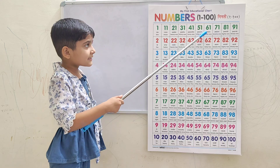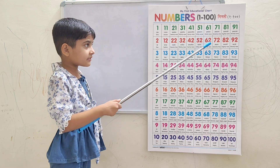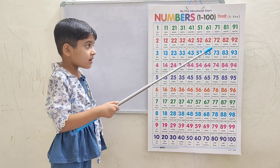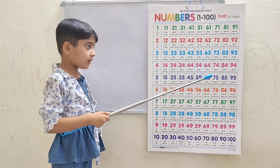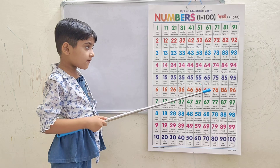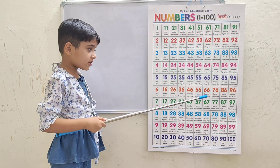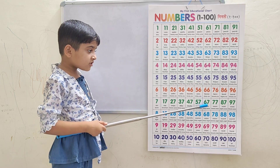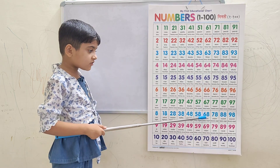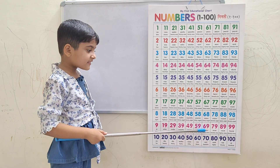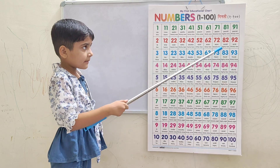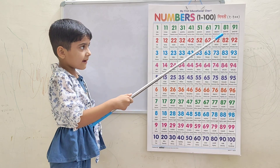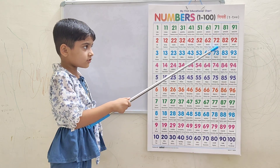60, 61, 62, 63, 64, 65, 66, 67, 68, 69, 70, 71, 72.